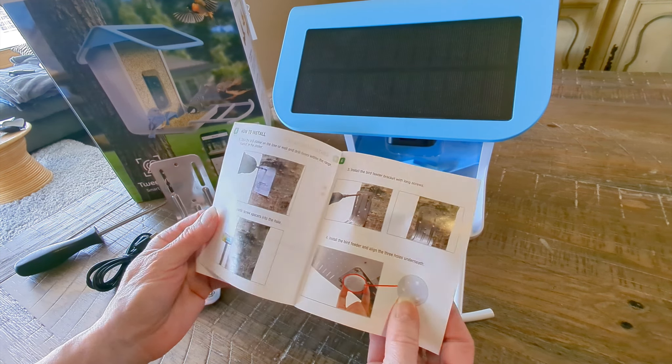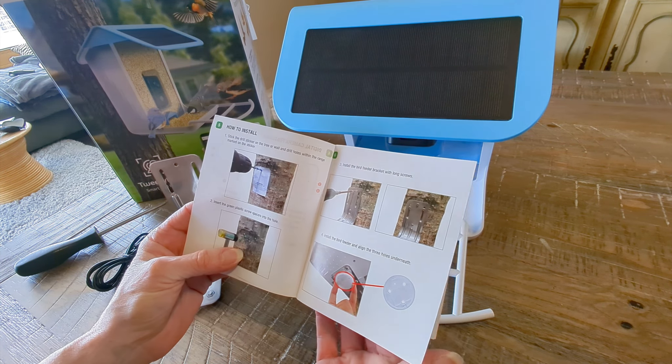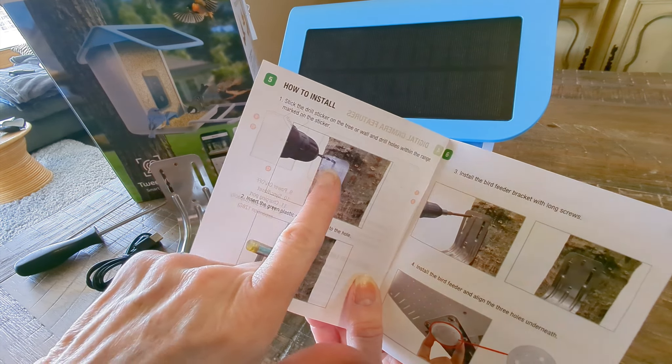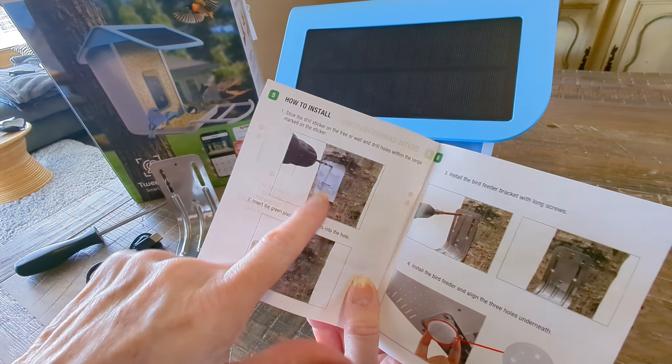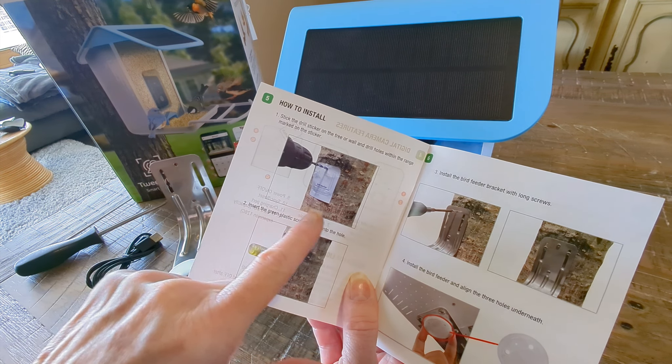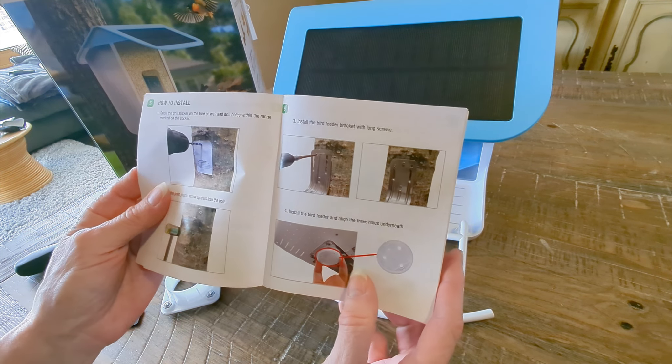You can read them. They're not the small font. They have pictures of everything. I mean, they even have a pattern here that you can put up on your tree to exactly where the screws need to go for your brackets, which is pretty cool.